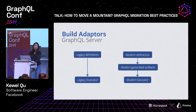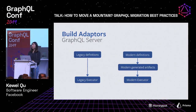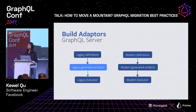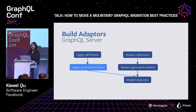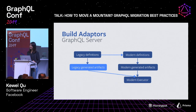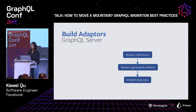For GraphQL Server, you'll find the exact same pattern. We have legacy definitions using our legacy executor, and modern definitions — with modern generated artifacts used inside the modern executor. What we did is introduce legacy generated artifacts that can be used inside the modern executor, and then get rid of the legacy executor completely. As we incrementally migrated our legacy definitions into modern definitions, we were able to finally live with only one modern system.